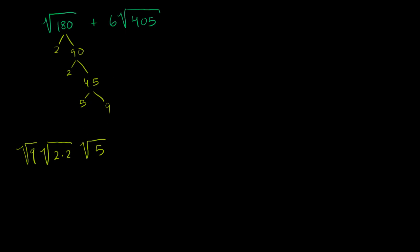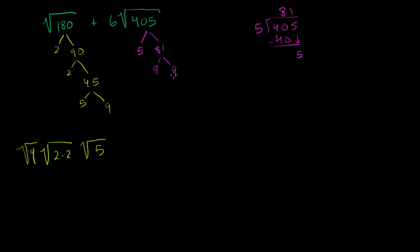Now what is the second term equal to? Let's factor 405: that is 5 times 81. To verify: 5 goes into 40 eight times, 8 times 5 is 40, subtract, bring down the 5, 5 goes into 5 one time — so 81. And 81 is 9 times 9, which is a perfect square, so no need to factor any more. So this second expression is plus 6 times the square root of 9 times 9, times the square root of 5.